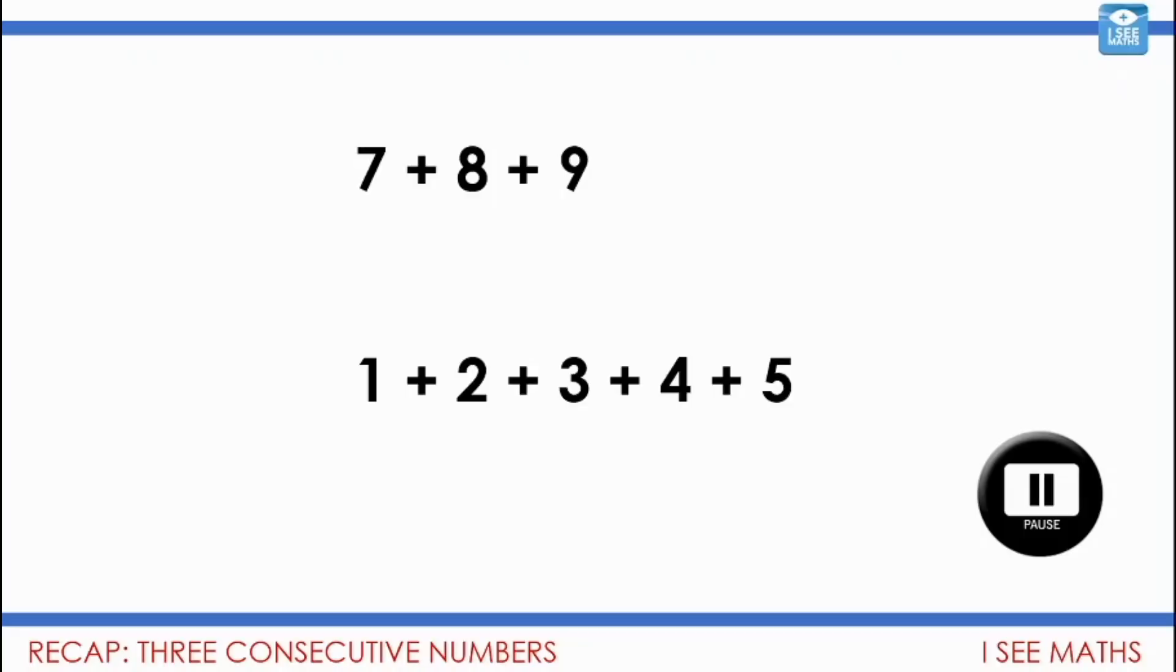Okay. So let's have a look. So seven plus eight plus nine. I mean, perhaps you added all the numbers or maybe you thought, well, I'm going to take one from this nine and put it onto the seven to make it three lots of eight, eight and eight and eight 24.